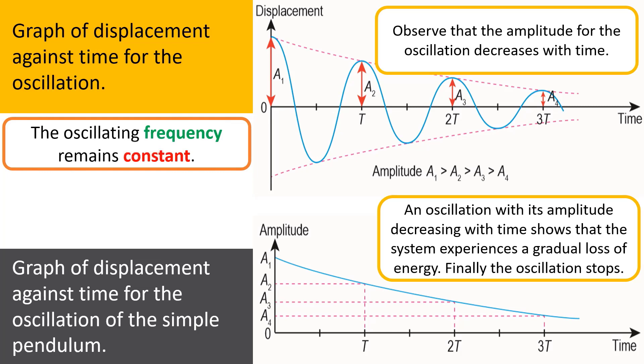So what do you get from here? We learn that the oscillating frequency remains constant. Observe the graph of displacement against time. You will see the period is the same length. From T to 2T and from 2T to 3T has the same length, so the period is constant. Therefore, the frequency also remains constant. However, from this we learn that the oscillating amplitude decreases.